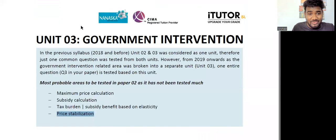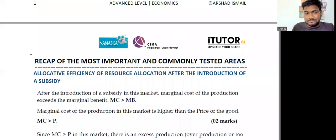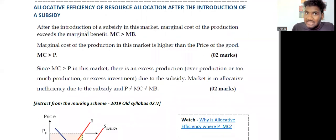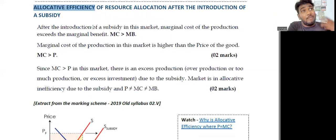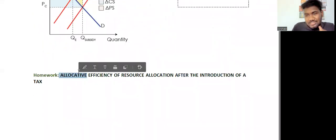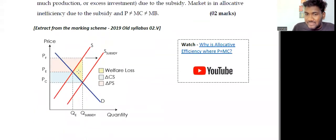This is one of the harder new areas that the examiner has started to test, and I feel it can be tested in your year as well. This is based on the 2019 A-level old syllabus paper. They ask you to show what allocative efficiency means. We study allocative efficiency in unit one — in 2019 they connected it with a subsidy. Maybe in your year they can connect it with a tax. I've given you that as homework. I'll explain the subsidy area and then you'll understand how to do it for a tax. I've also put a small YouTube video which you can watch.